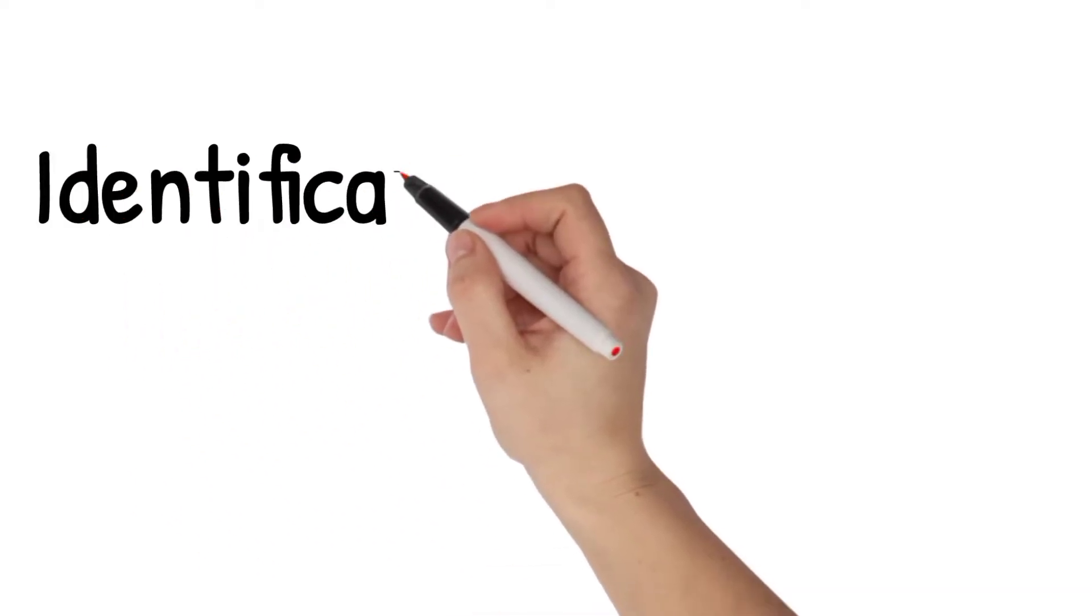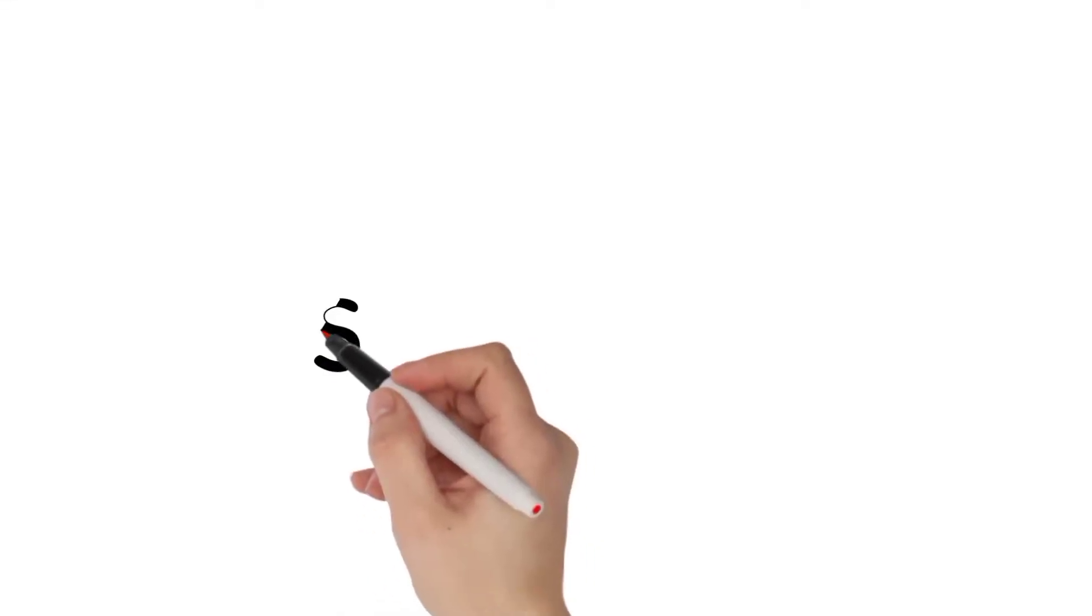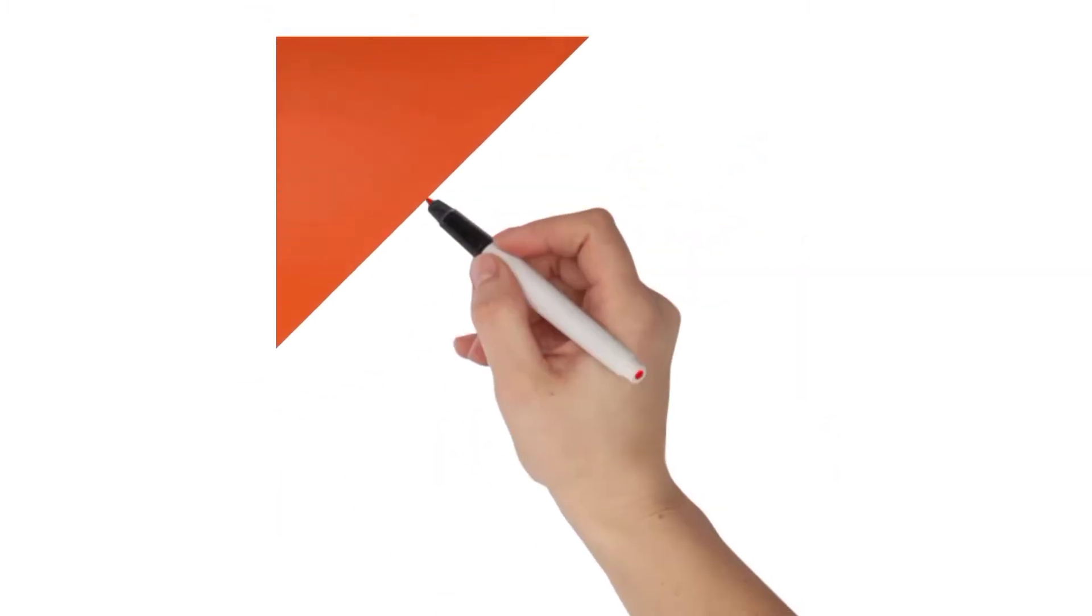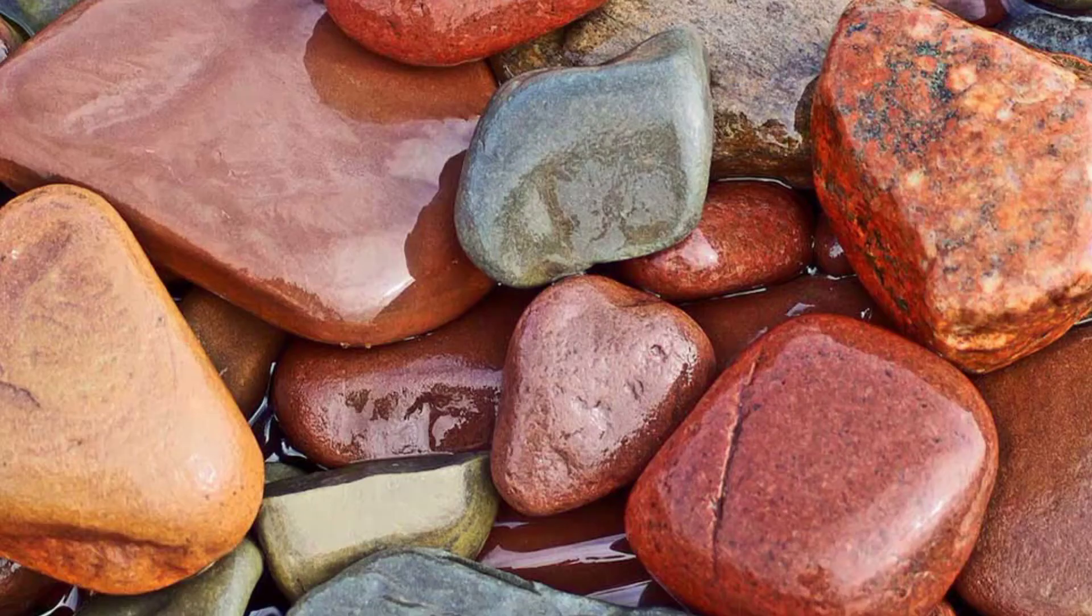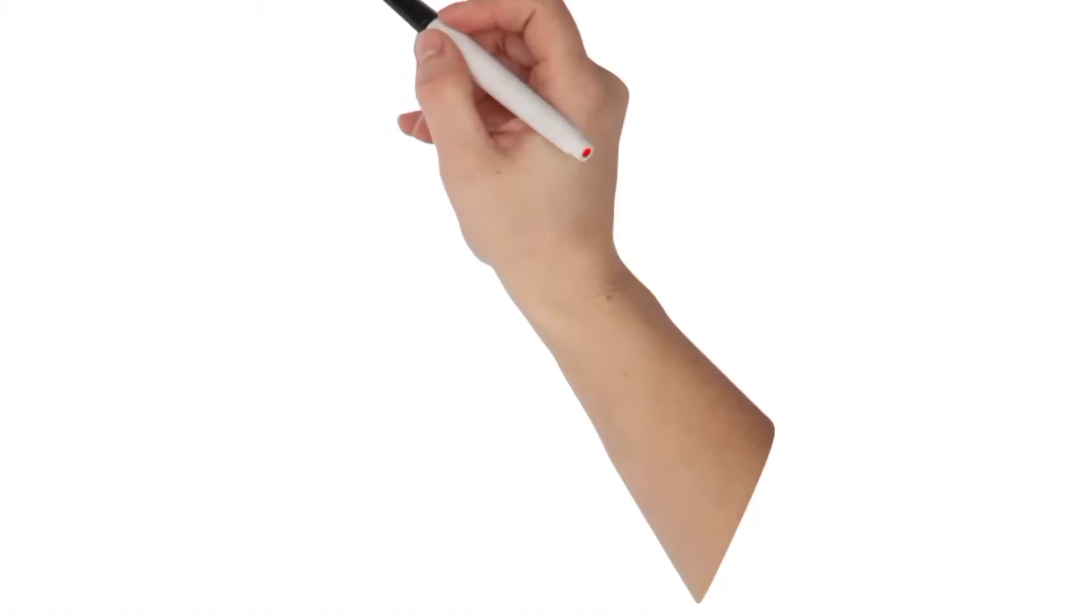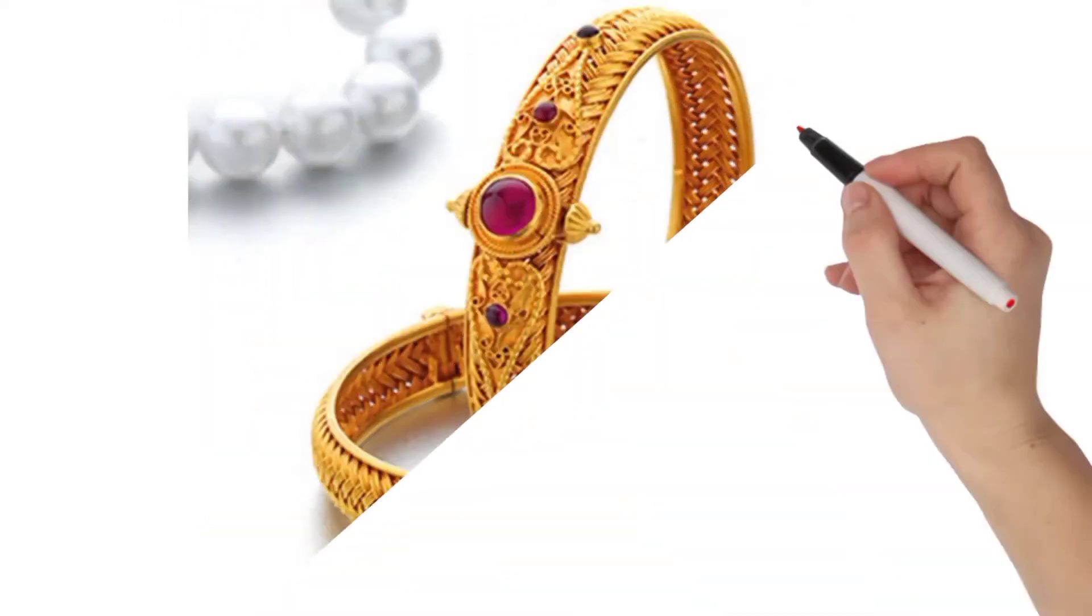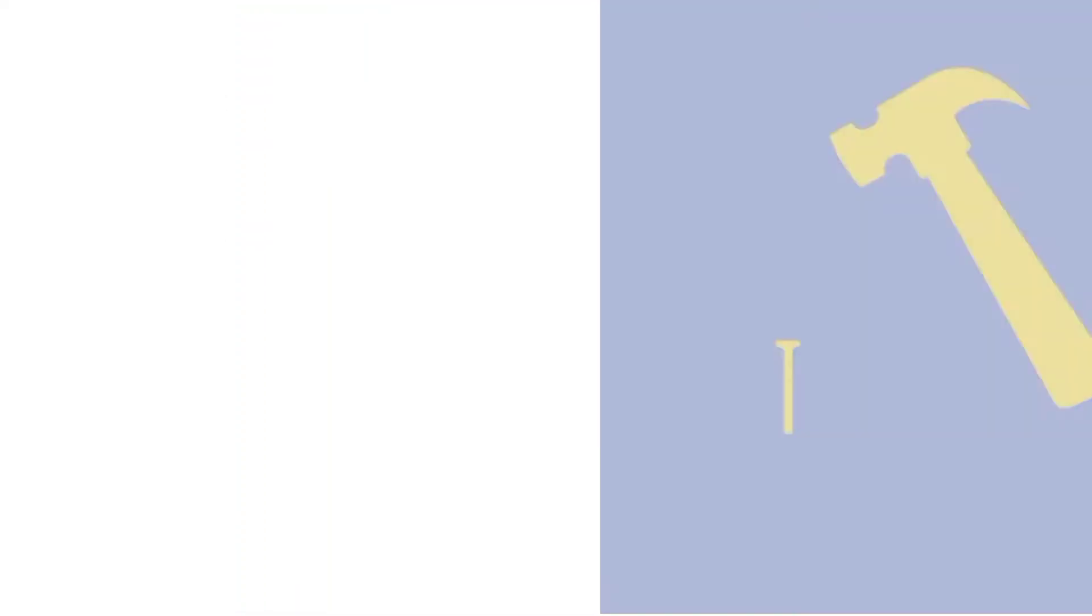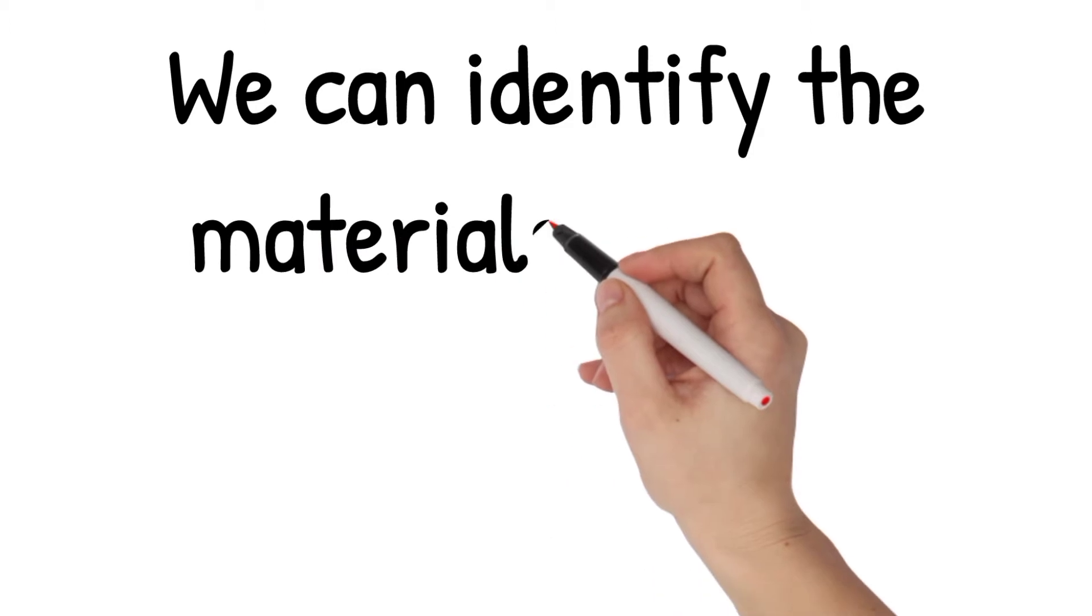We will start from appearance. If we find any object, it may look or appear shiny or dull. Such as a piece of brick, a piece of wood which is not shiny. When we find any glass, steel, stainless steel glass, any utensils, bangles, iron nails, hammer, these are shiny. So it means we can identify the materials through its appearance.